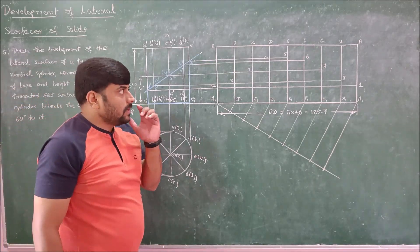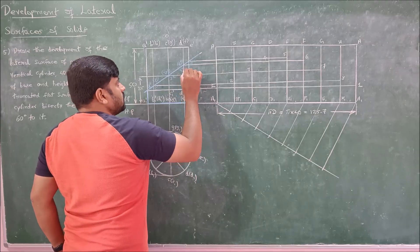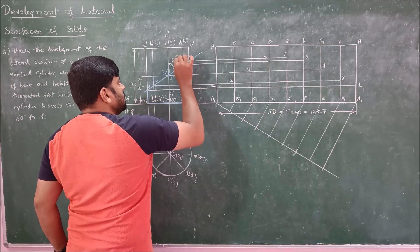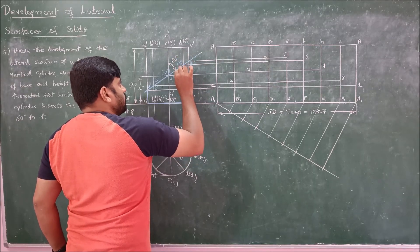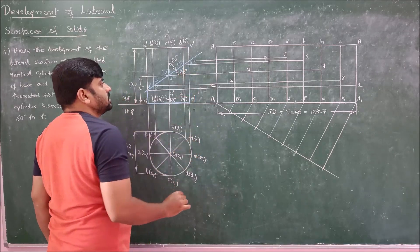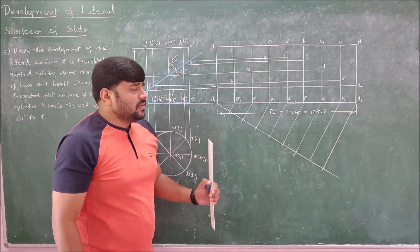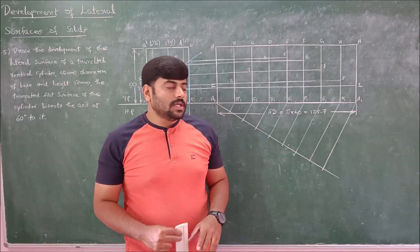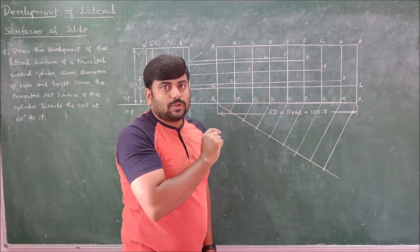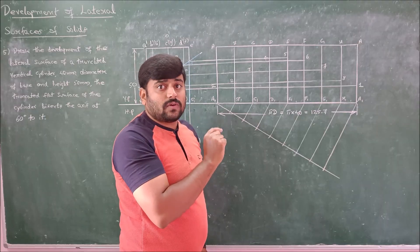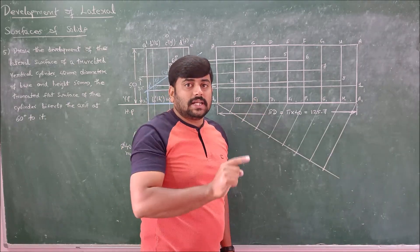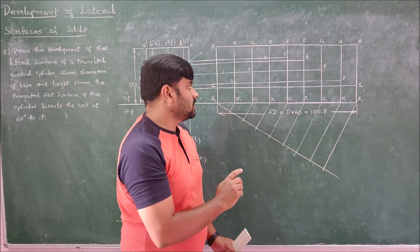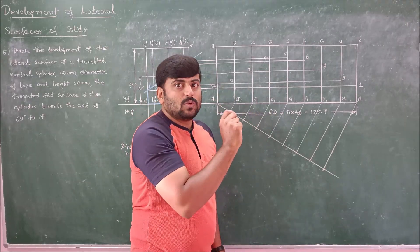Mark the angle of inclination: the cutting plane bisects at 60 degrees to the axis, which corresponds to 30 degrees to the base. Now, an important observation for cylinders: a cylinder does not contain any sharp edges — it has only a smooth surface. Therefore, all the marked points must be connected using a smooth curve, not sharp lines.